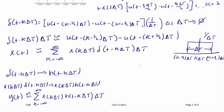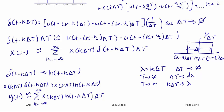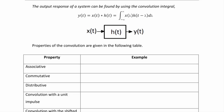If we let λ = kΔT and let ΔT approach zero, the summation becomes an integral. We can write the convolution integral: y(t) = ∫ from −∞ to +∞ x(λ) h(t − λ) dλ. The output response of a system is found using this convolution integral, represented by the system diagram where h(t) is the system, x(t) is the input, and y(t) is the output.